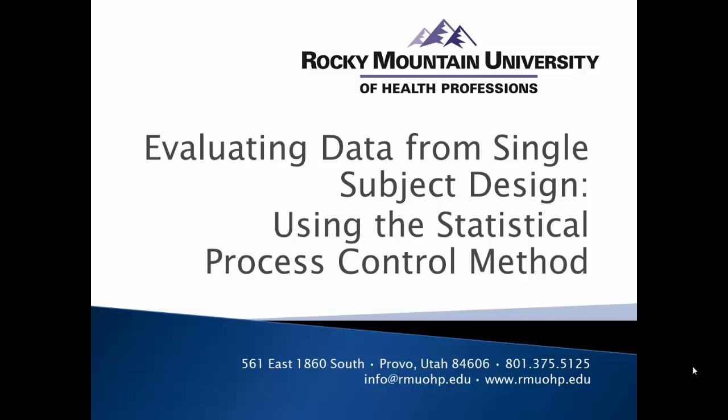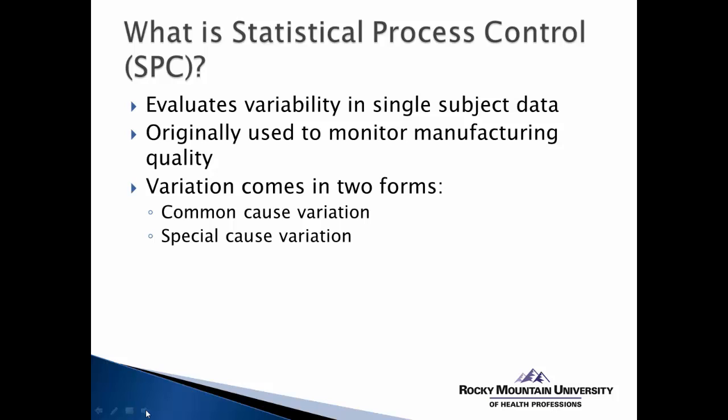In this video, I'll explain and demonstrate how to use the statistical process control method to analyze data from single-subject research designs. Statistical process control is a unique application of a statistical model that can be used to evaluate variability in single-subject data. This process was actually developed in the 1920s as a means of quality control in the manufacturing process, with the basis lying in the desire to reduce or identify variation in an outcome. Traditionally, it was used to measure the consistency in production of a manufactured item.